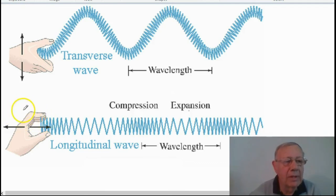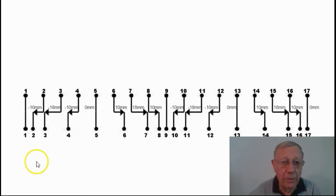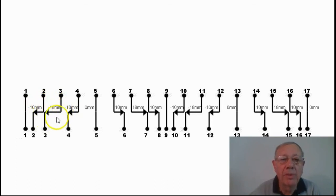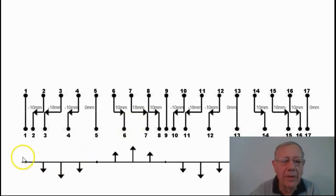If the hand was moving faster, that would produce a higher frequency and a lower period. When it comes to the amplitude of compression waves, it can be a little difficult to recognize, but we're still looking at the maximum displacement from the rest position. The amplitude of this particular wave is 18 millimeters, and you can see how we can represent the amplitude of the compression wave by looking at that maximum displacement.